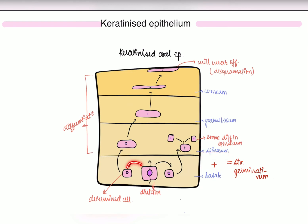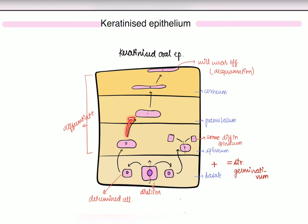Once a cell is formed and determined, it starts differentiating. Once a cell is determined, it cannot further divide. This cell then travels to the layer above, where its shape begins changing slightly — from cuboidal it flattens a little. Moving to the next layer, it flattens more, and finally it flattens completely and is worn off.